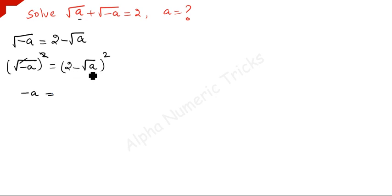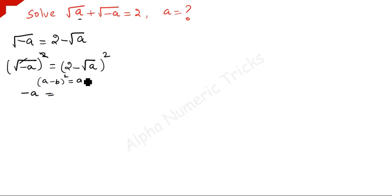That is the (a minus b)² formula we have to apply. What is a minus b the whole squared? It is a squared minus 2ab plus b squared.